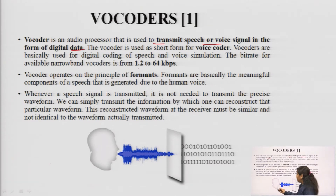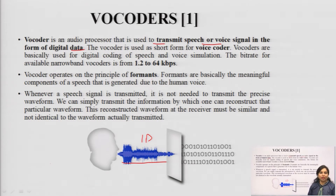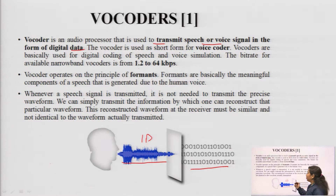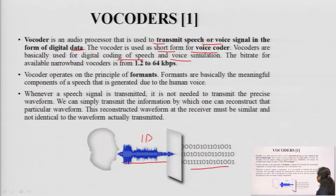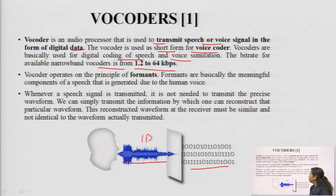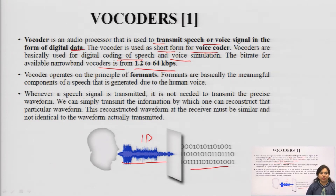You can see in this image that this is a human speech signal, which is a 1D signal — a continuous time signal — and it has to be processed and saved in the form of digital bits of information, that is in the form of 1s and 0s. The vocoder is used as short form; it is known as voice coder. These are basically used for digital coding of speech and voice simulation. The bit rate for available narrow band vocoders is in the form of 1.2 to 64 kbps, which means the number of bits transmitted per second used to process the digital data converted from analog data.